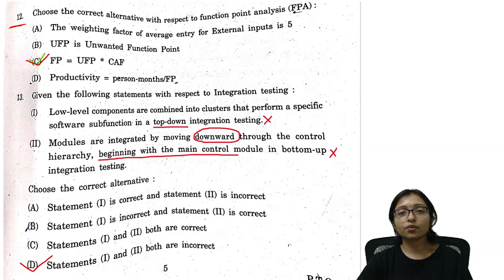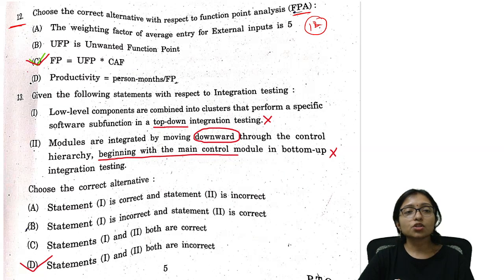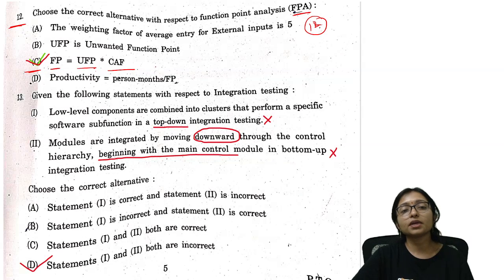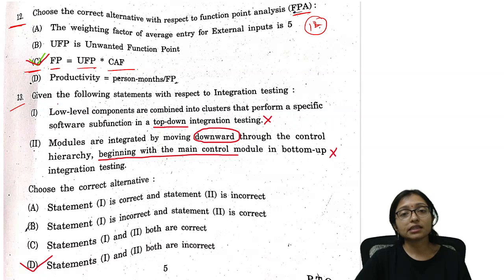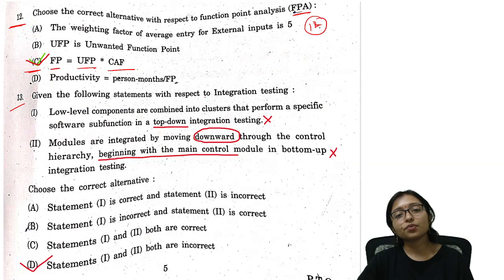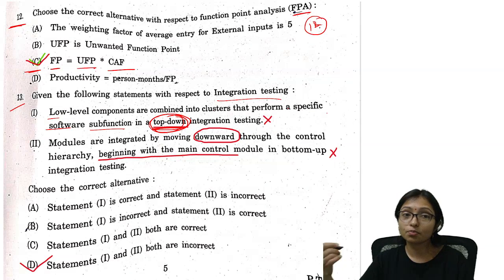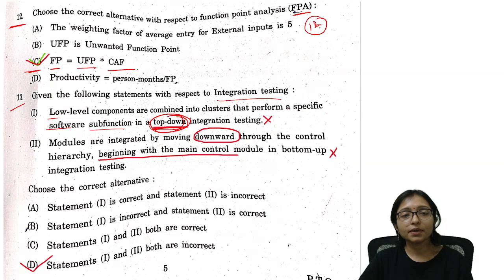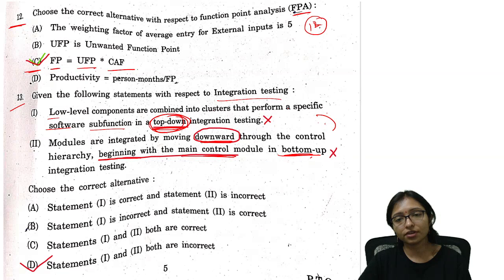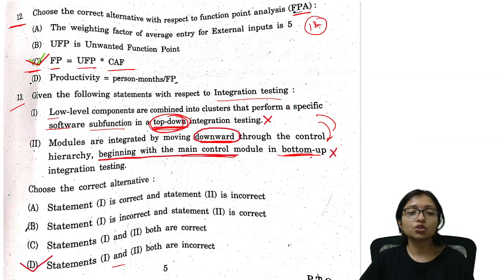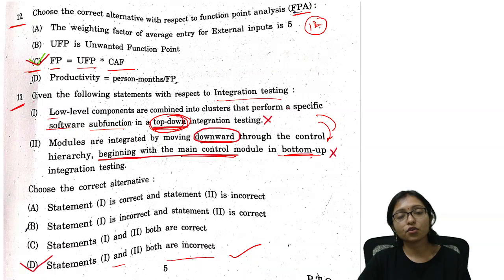Now moving to Software Engineering. Question 12: Function point formula is UFP plus CFP — option C is correct. Question 13: Statements about integration testing — top-down and bottom-up descriptions are given in reverse. Low-level combining is bottom-up, and beginning from main control downwards is top-down — but the statements given are swapped. So both statement 1 and statement 2 are incorrect — that is the correct answer for question 13.